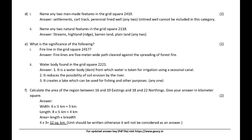Name any two man-made features in the grid square 2419. Answer: Settlements, cart track, perennial lined well — any two. Note: unlined well cannot be included in this category.